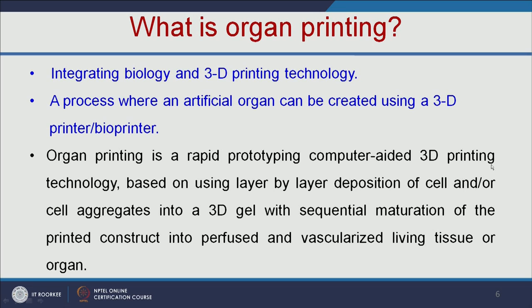Let us see what is organ printing. It is integrating biology and 3D printing technology. It is a process where an artificial organ can be created using a 3D printer or bio-printer. Organ printing is a rapid prototyping, computer-aided 3D printing technology. It is based on layer-by-layer deposition of cells on a 3D gel, with sequential maturation of the printed construct into perfused and vascularized living tissue or organ.